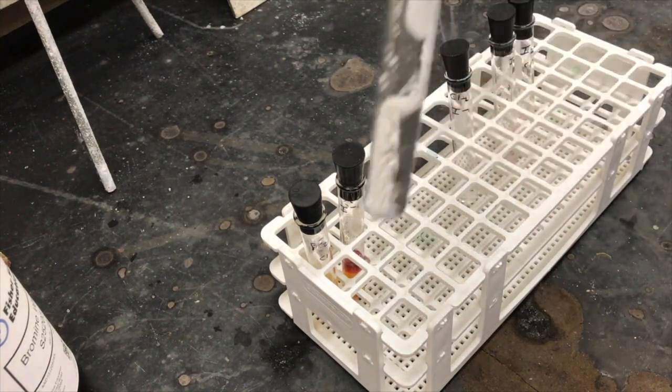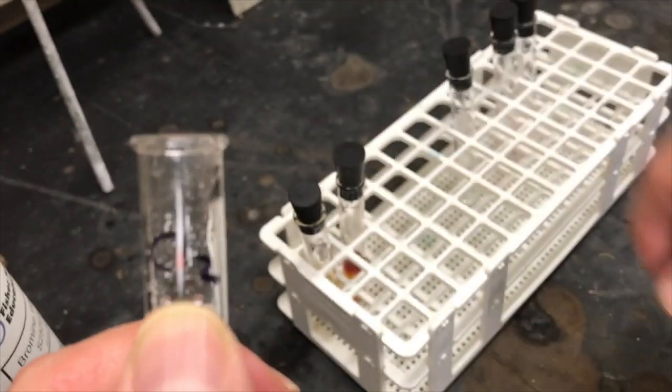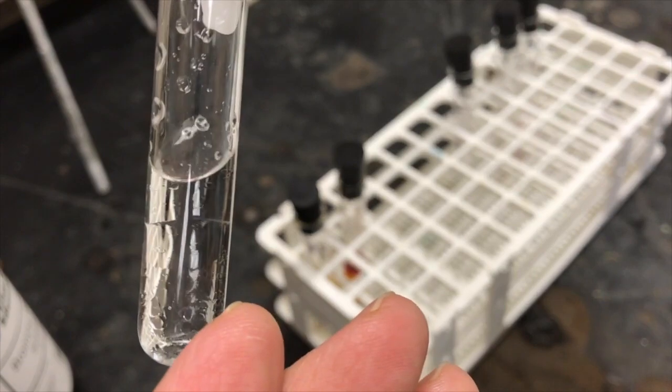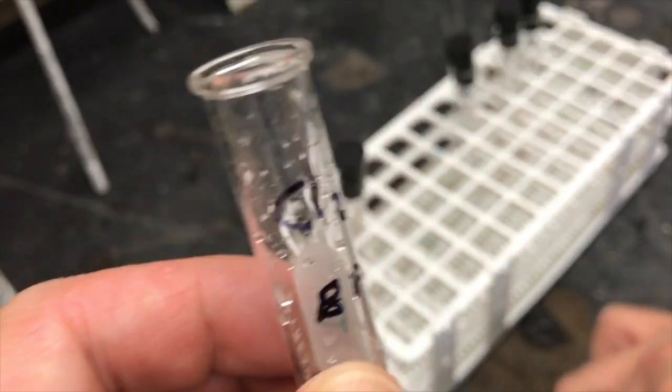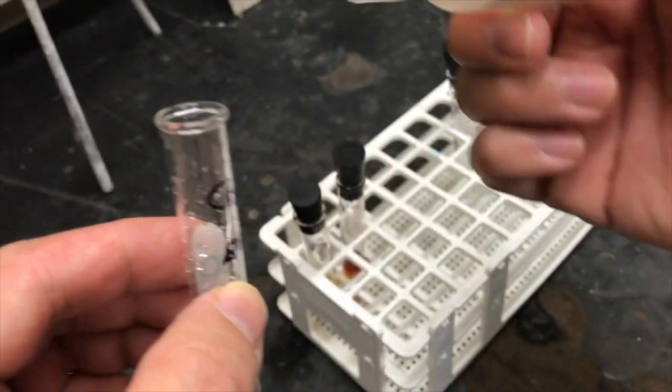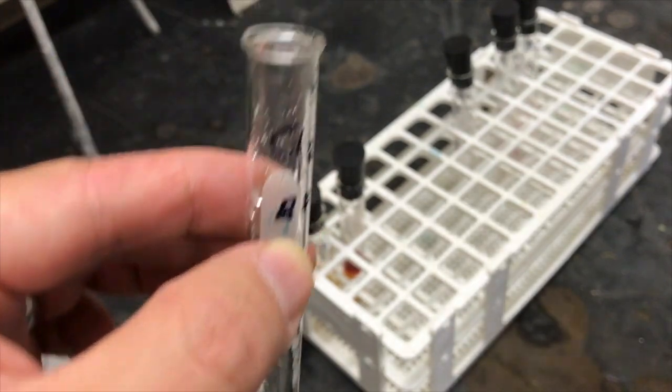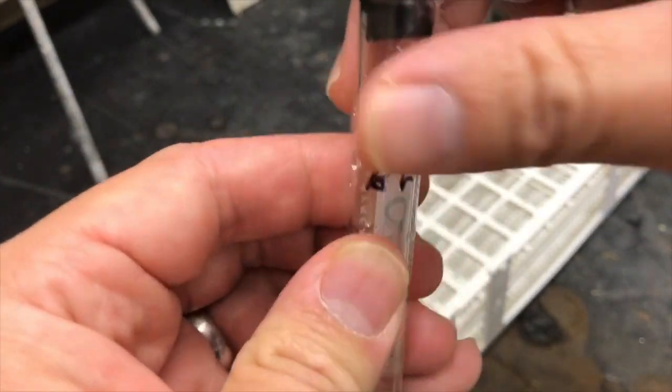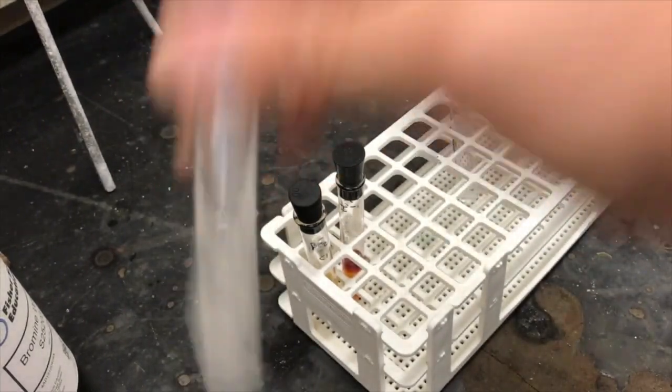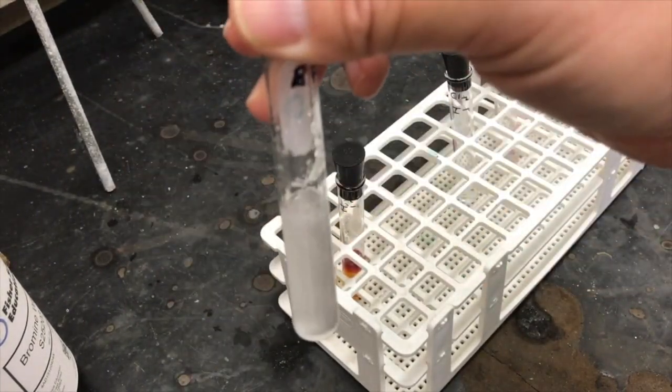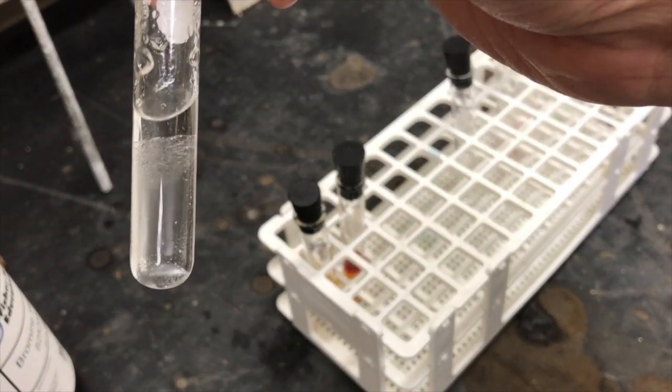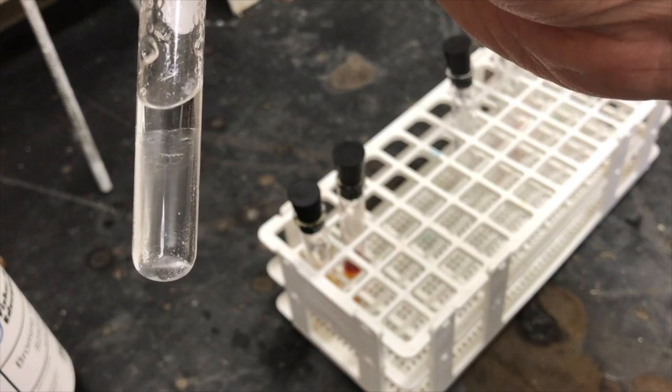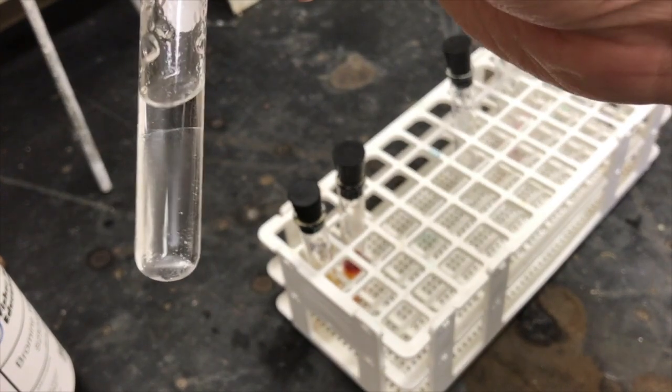The next test tube is going to be chlorine with sodium bromide. And there is effectively no change. They're both relatively clear to begin with and they're both still clear now.